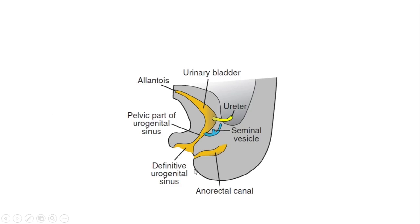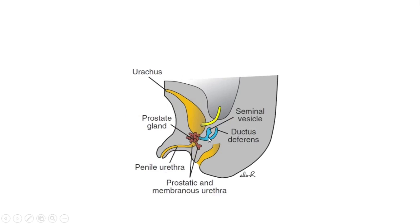First, let us start with the embryology of the prostate. This diagram is taken from Langman's Embryology. Here is the allantois, this is the urinary bladder, this is the ureter coming from the developing kidney, here is the seminal vesicle, this is the ejaculatory duct, this part is the pelvic part of the urogenital sinus, this is the definitive urogenital sinus, and this is the future penis. At the end of the third month of intrauterine life, at the pelvic part of the urogenital sinus, the prostatic epithelium will start to sprout and proliferate, penetrating the surrounding mesenchyme. This develops into the prostate gland in the male, and into urethral and periurethral glands in the female.